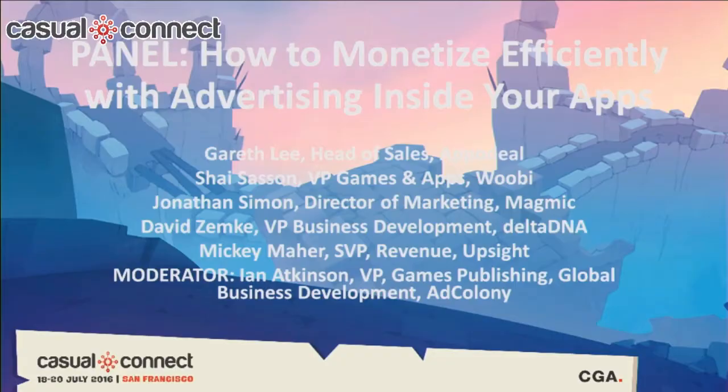I'm Mickey Maher. I've spent nine years in the space with companies that have dabbled in app, Facebook, and mobile app monetization. I recently left Unity Technologies, where I ran the Unity Ads business, to join UpSight — a full stack of user-level analytics, segmentation, in-app marketing, and ad monetization platform. I'm the current SVP of revenue at UpSight. I'm Jonathan Simon, director of marketing at Magmic. In addition to handling all the UA, I also handle all the ad monetization. Magmic's been around since 2002 — we publish titles like Scattergories, Phase 10, Skipbo by Mattel, and Rubik's Cube, and we've been heavily into ad monetization for the last couple of years.